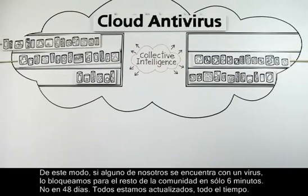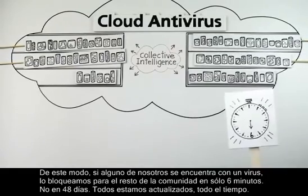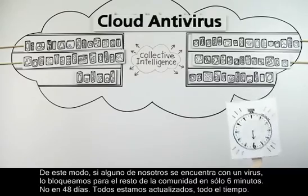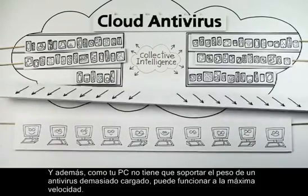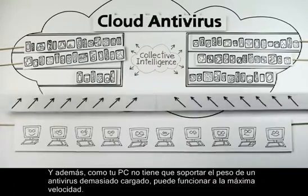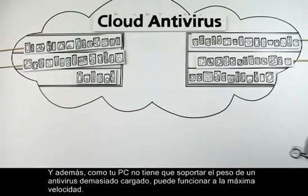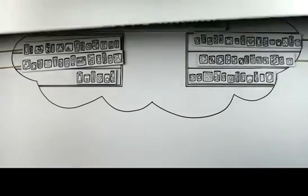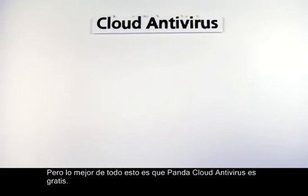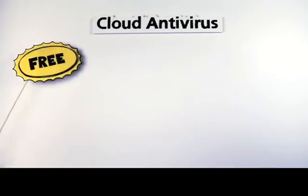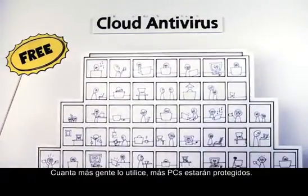So if one of us makes contact with a virus, we block it from the rest of the community in as fast as 6 minutes — not 48 days. We're all up to date all the time. And because your PC is no longer weighed down by clunky antivirus software, it can compute at its highest speed. But the very best thing about Panda Cloud Antivirus is that it's free, because the more people use it, the more computers there are keeping everyone safe.